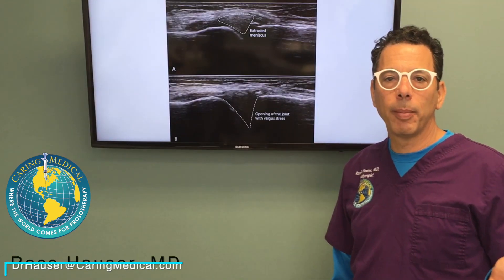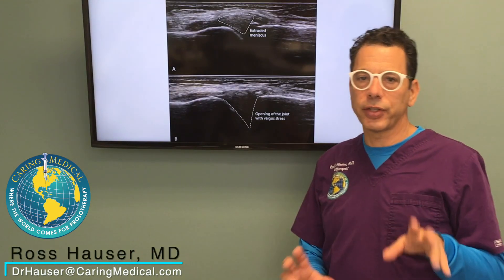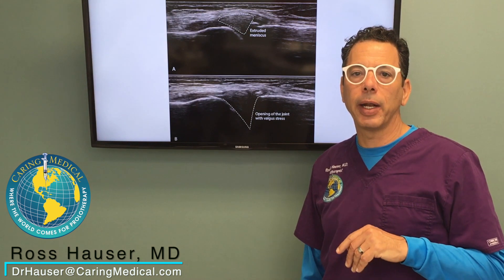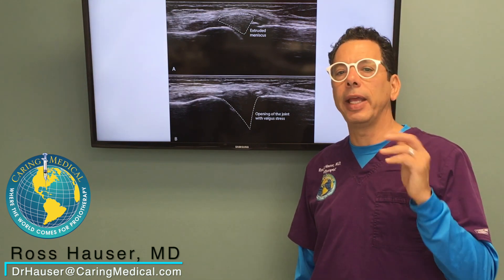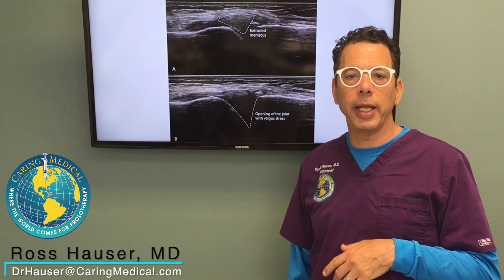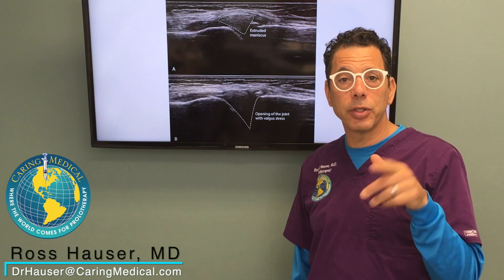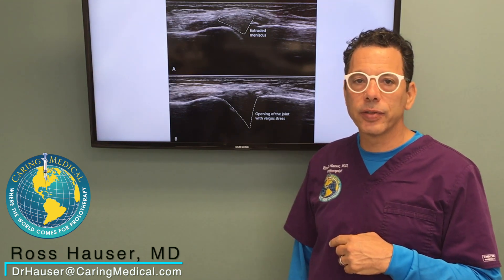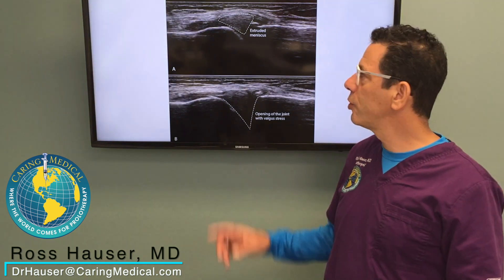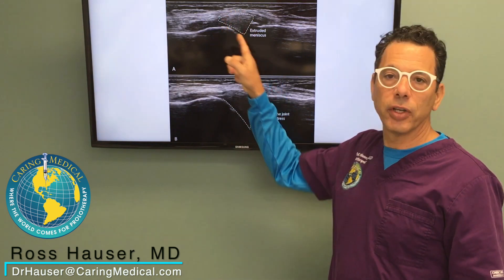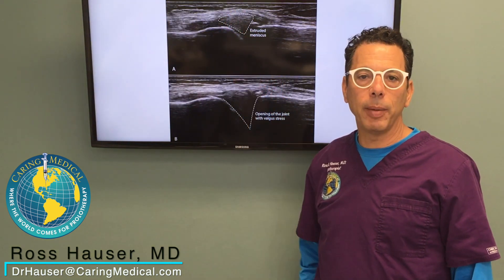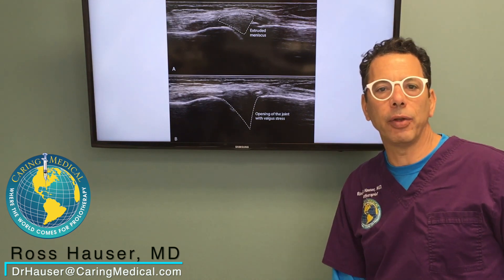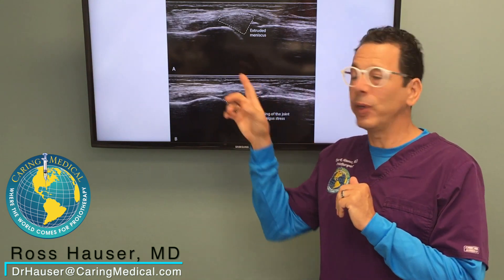I wanted to talk about ultrasound and how we use it at Caring Medical to document the abnormalities of joint instability, which is the cause of osteoarthritis. You see an image of ultrasound here which shows an extruded meniscus. A lot of people don't realize that especially with medial knee pain — the inside of the knee — they actually have a meniscus that's outside of the joint.